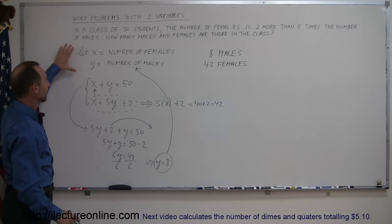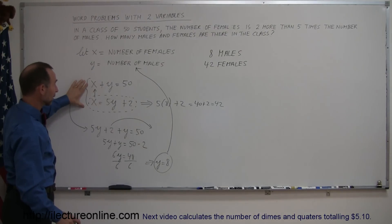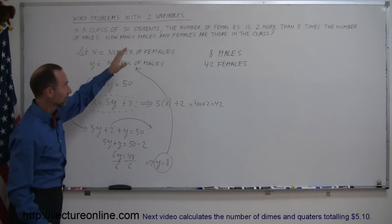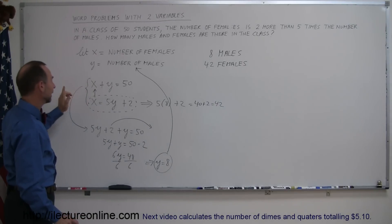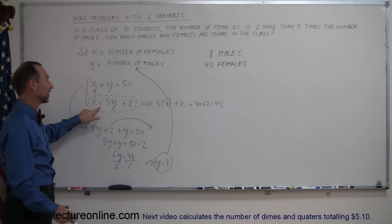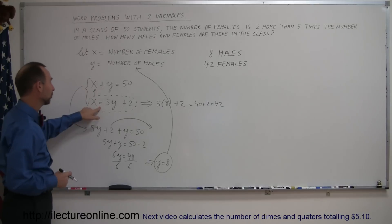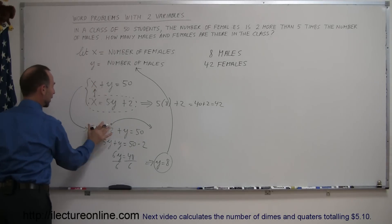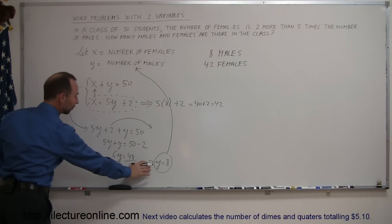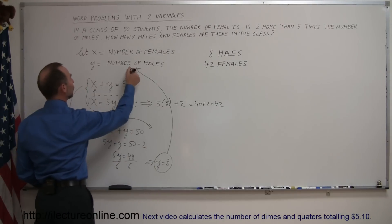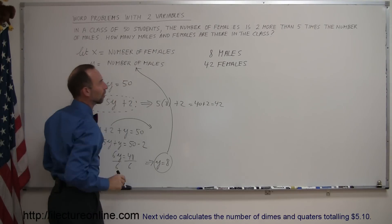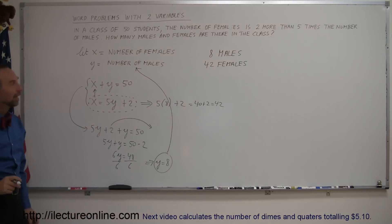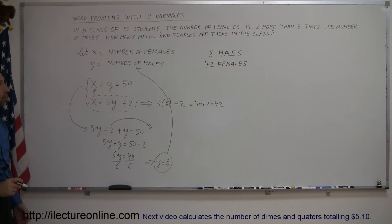To summarize: carefully define your variables, then come up with the two equations from the information given. In this case, one equation was already solved for x in terms of y, so we substituted it into the other equation. That gave us one variable to solve for. Then we plugged that value back into one of the original equations to find the other variable. That's how you solve a problem like this using two variables.